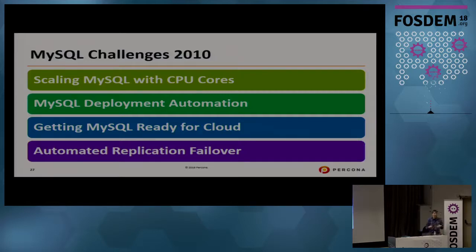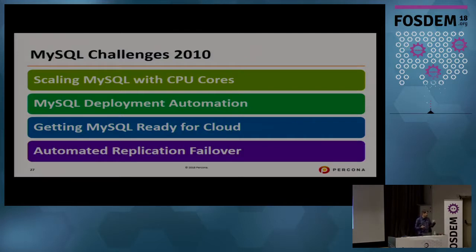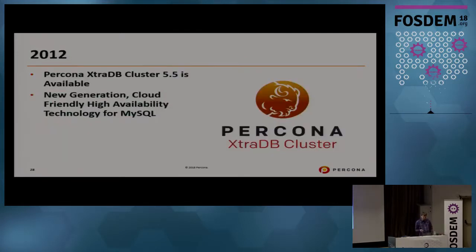The specific problem of replication failover automation was also significant. Unlike modern database systems, MySQL doesn't have built-in replication failover. If you have a master and multiple slaves and the master crashes, pretty much nothing happens automatically — you'd have a bunch of slaves trying to connect to a master that doesn't exist. Selecting the new master, adjusting the load balancer — all had to be done manually. Tools like MySQL Multi-Master Manager and later MHA were created to help with that.